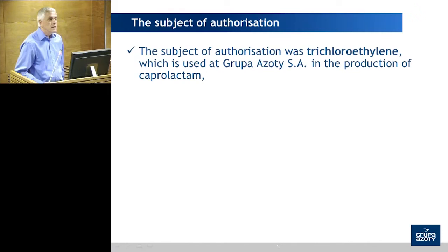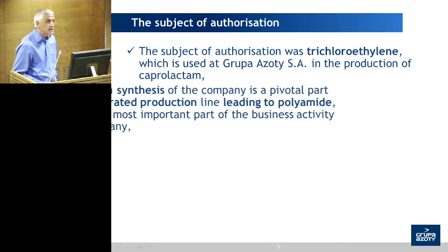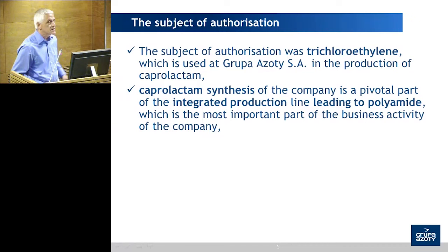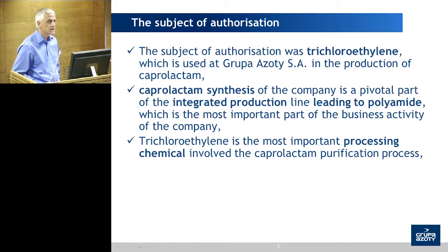The subject of the authorization was the use of trichloroethylene in the production of caprolactone, and as you see, it's used for polyamide production. The elements important for the use applied for are: use as a process chemical — that's defining the function of the chemical — and importantly, this was a downstream user application.